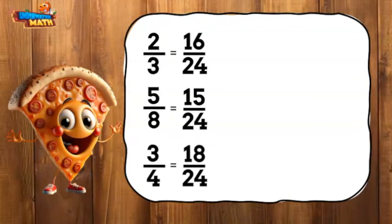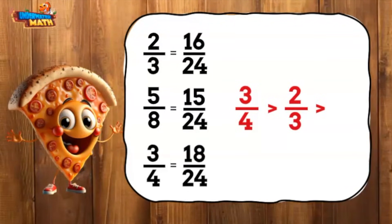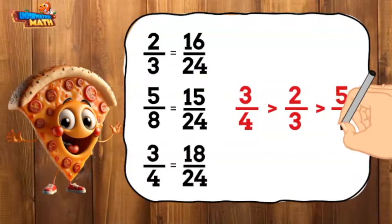So, since 18 twenty-fourths is the largest, three-fourths is the largest fraction among the three. The second largest fraction is 16 twenty-fourths, or two-thirds. The smallest fraction is 15 twenty-fourths, or five-eighths.